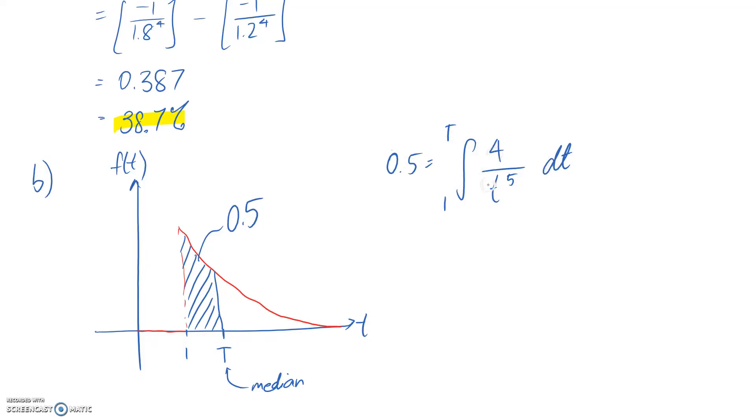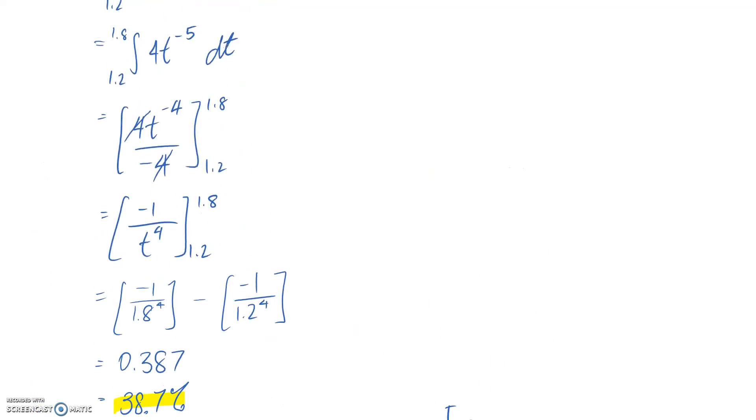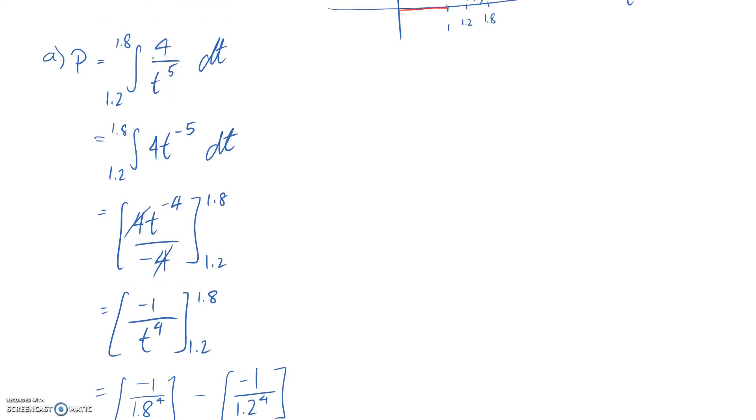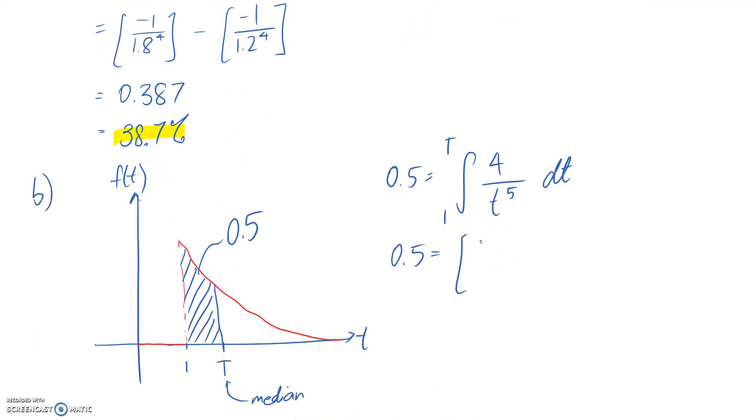So what I need to do is go through and actually integrate this. Now, we're going to find that this is the same as what we had above, and when we integrated, it was here, 4 on t to the power of 5, we were able to simplify it to look like this, so negative 1 on t to the 4. So I'm just going to copy that expression across, and our bounds are different this time, though. It's going to go from 1 to capital T.